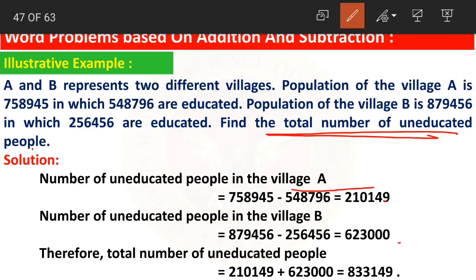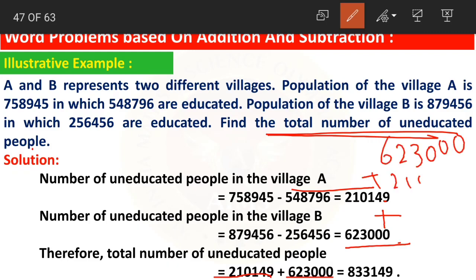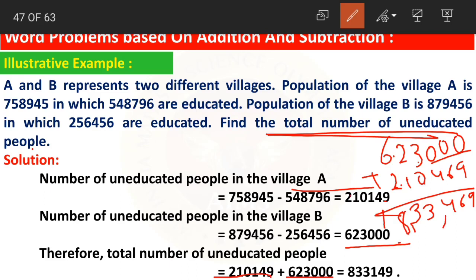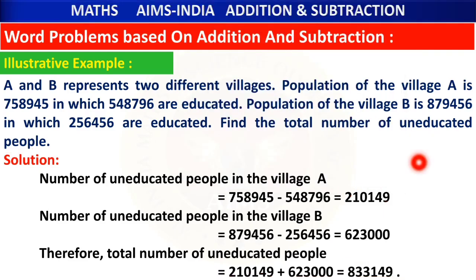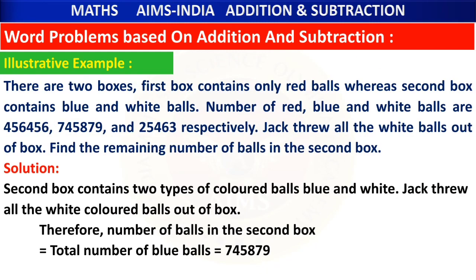To find the total uneducated people: uneducated in village A plus uneducated in village B. So 2,10,149 plus 6,23,000: 9 plus 0 is 9; 4 plus 0 is 4; 1 plus 0 is 1; 0 plus 3 is 3; 1 plus 2 is 3; 2 plus 6 is 8. The total is 8 lakhs 33,149. This is the total number of uneducated people in both villages. First we subtracted, then we added the differences.